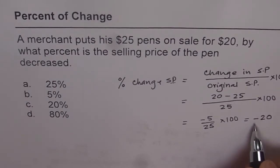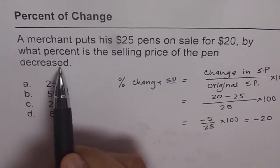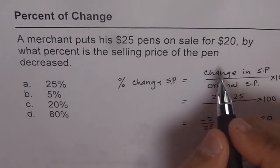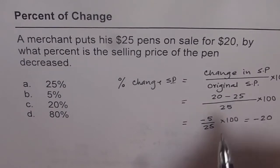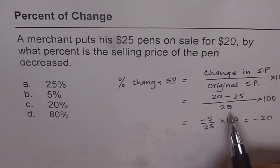Minus indicates decrease. Do you see that? So the question is, what percent is the selling price of the pen decreased? So you get minus. So it is change. So remember a few things: change is final price minus original price, and original price comes in the denominator. Okay?